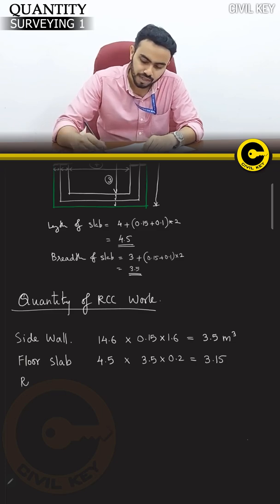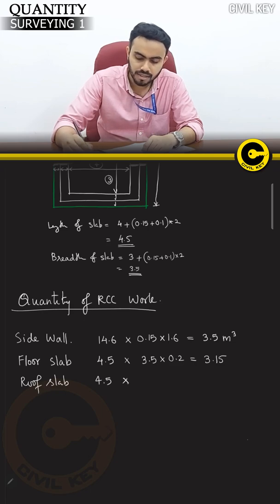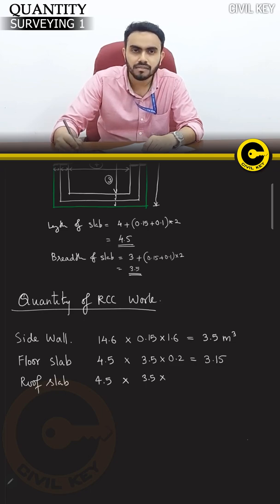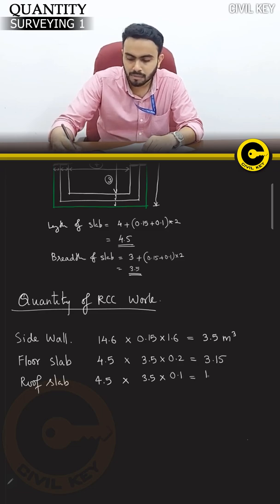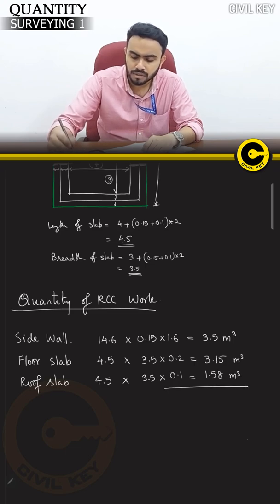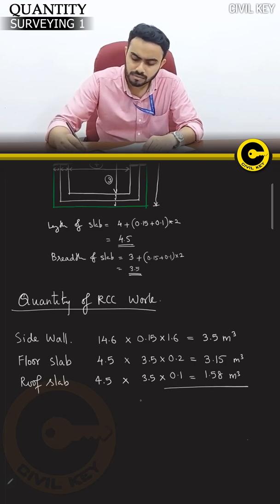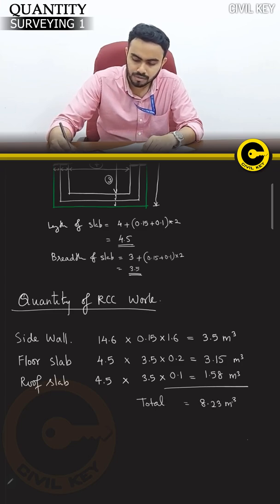This is the roof slab — same length and breadth dimensions. This is the depth, which is 10cm. The volume is 1.58m³. This gives a total combined volume of 8.23m³.